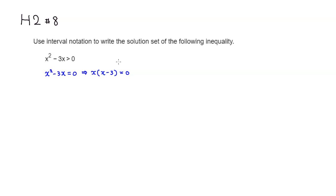The right-hand side doesn't change. To get a product of 0, at least one of these factors, x or (x minus 3), must be 0. So either x equals 0, or we set x minus 3 equal to 0, which gives x equals 3. So our solutions are x equals 0 and x equals 3.